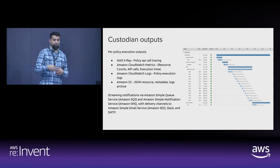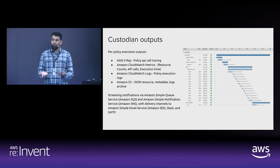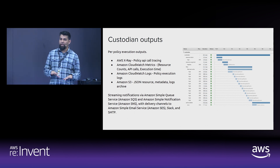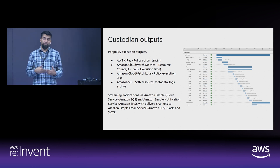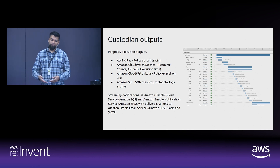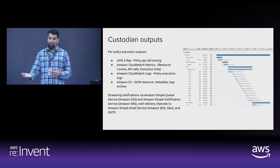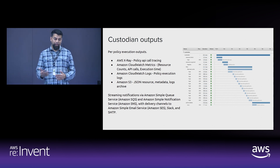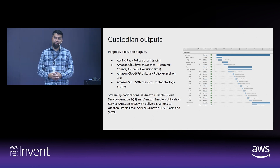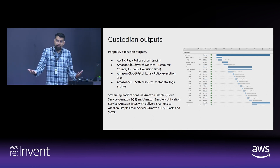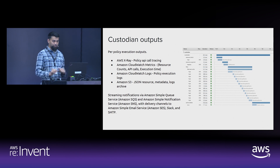We also have CloudWatch logs and S3 outputs for JSON. For driving that behavior change, it's all about real-time feedback to users. We integrate with SQS, SES, and SNS, and we have a separate mailer tool you can deploy as a standalone Lambda to deliver to Slack, real-time chat ops — take your pick.